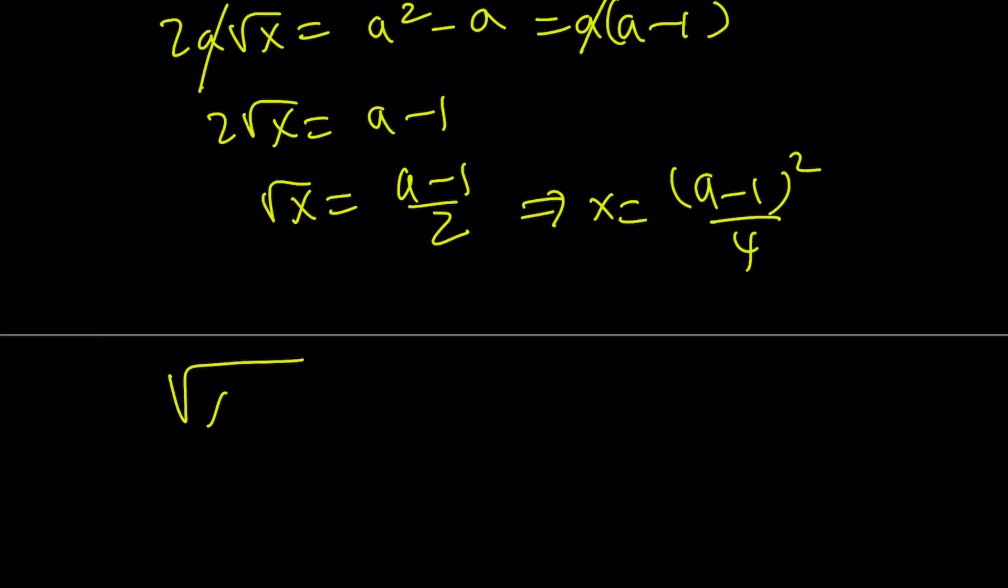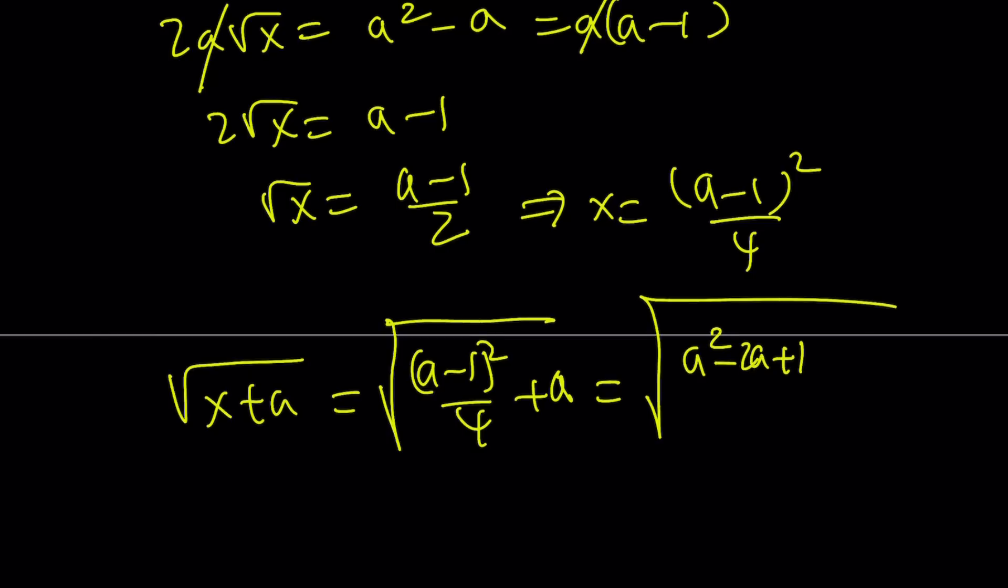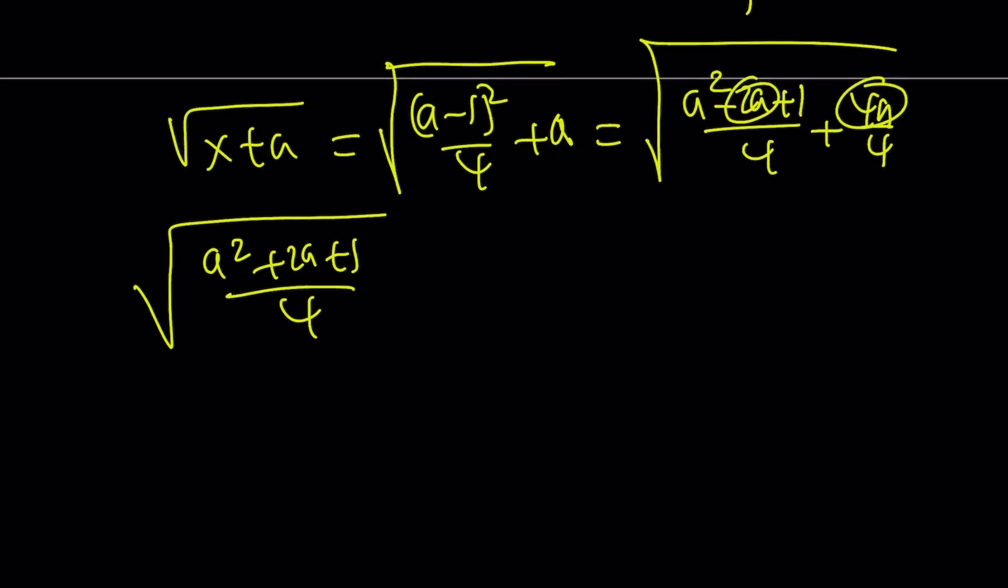And I do need to find square root of x plus a, which is x is a minus 1 squared over 4. I have to add a to it. This is going to be a squared minus 2a plus 1 over 4 plus 4a over 4. Just add these up. You're going to get 2a. a squared plus 2a plus 1 over 4. And then this is a plus 1 squared over 2 squared. Square root that. You get a plus 1 over 2.